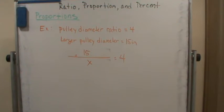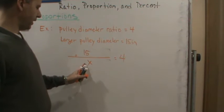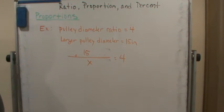Now that we have this equation, 15 divided by x equals 4, how do we approach this?